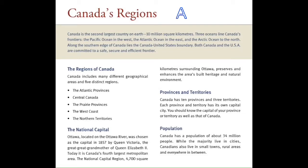Canada's regions. Canada is the second largest country on earth, with 10 million square kilometers. Three oceans line Canada's frontiers: the Pacific Ocean in the west, the Atlantic Ocean in the east, and the Arctic Ocean to the north. Along the southern edge of Canada lies the Canada-United States boundary. Both Canada and the USA are committed to a safe, secure, and efficient frontier.